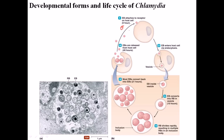The elementary body attaches to the host cell via receptor-ligand binding. The host cell then recognizes it and engulfs it through endocytosis. After endocytosis, the elementary body sits inside a vesicle produced by the host cell. Inside the vesicle, it starts to mature, producing mRNAs, RNAs, and DNA, and finally produces the proteins needed for infection and gene expression.